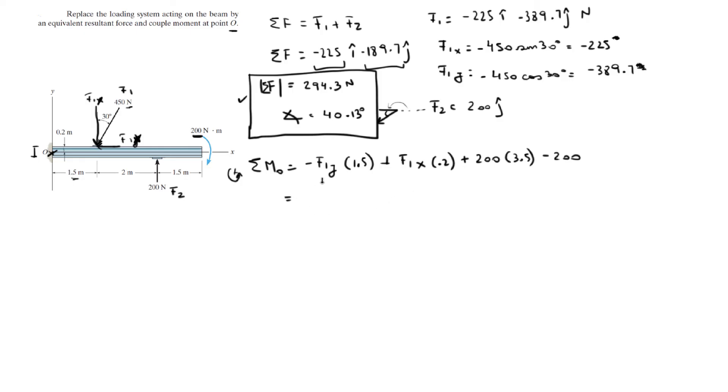So, once you plug in F1 Y, F1 X, and yeah, you plug them in and you plug all this into your calculator, you're going to get that the resultant moment is equal to negative 39.55. Since we were assuming that counterclockwise was positive, that means that the moment about O is equal to 39.55 counterclockwise.